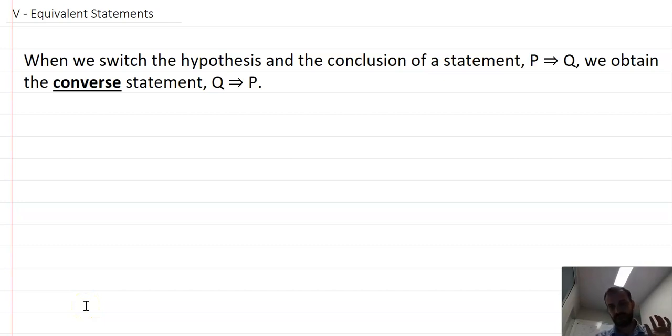So we're still doing proofs here, this time we're looking at equivalent statements. When we switch the hypothesis and the conclusion of a statement, P implies Q, we obtain the converse statement, Q implies P. Important word here is converse. So let's take a look at an example first.